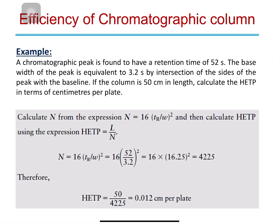To calculate the height equivalent to the theoretical plate, you divide the length of your column by the number of theoretical plates. Let's see an example of how to calculate the efficiency of a chromatographic column. If you have a chromatographic peak with a retention time of 52 seconds, a base width of 3.2 seconds, and the total column length is 50 centimeters, we need to calculate the HETP in centimeters per plate.